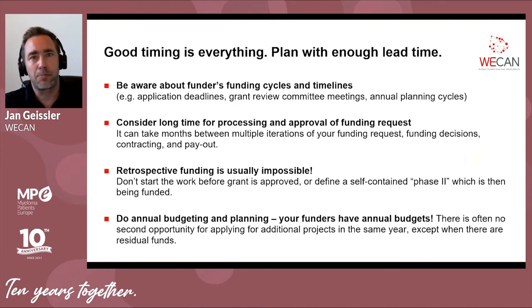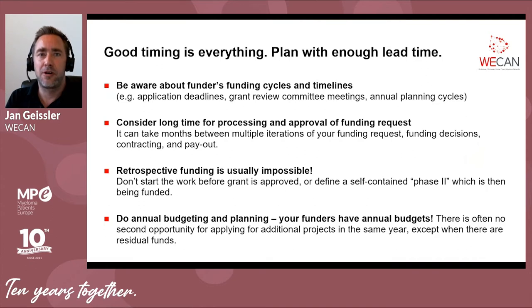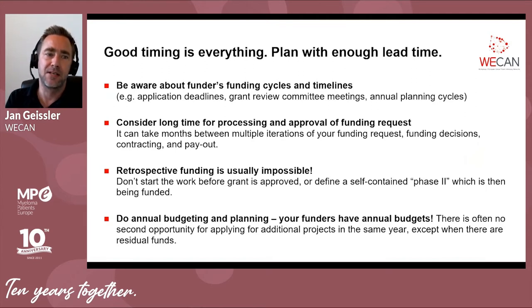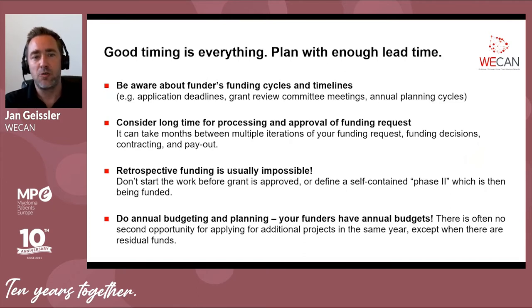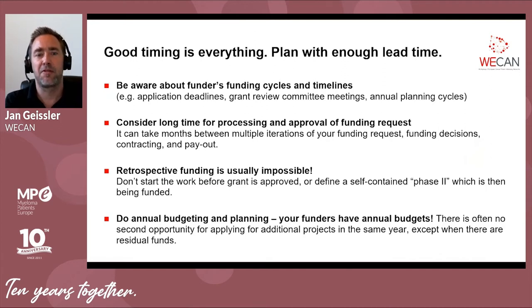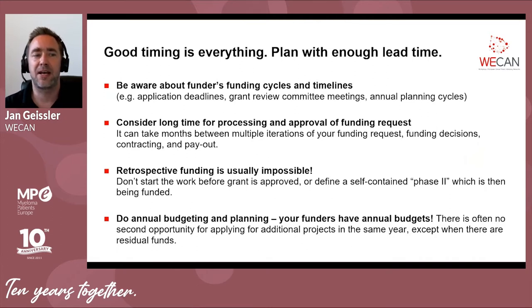Retrospective funding is very often impossible. You cannot start work now and then propose something where by the time you reach terms with the sponsor, they say you've already started the project and they can no longer fund things that have already started. A good way around that is to define different phases — say phase one has started, but you're applying for phase two, which begins in three months. That way it's not retrospective. So defining separate project phases is sometimes a way around retrospective funding.